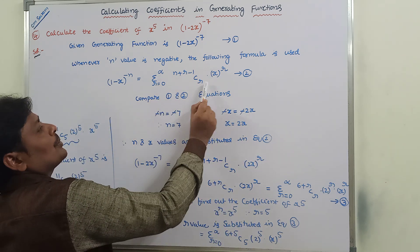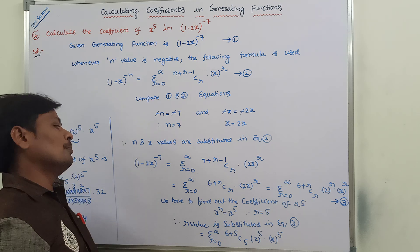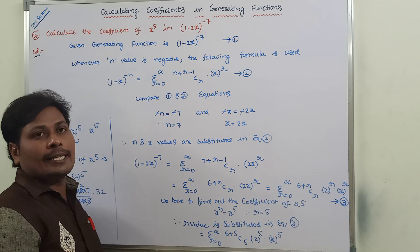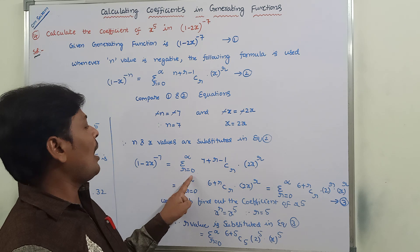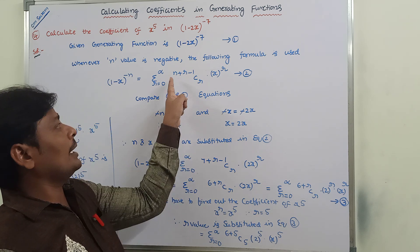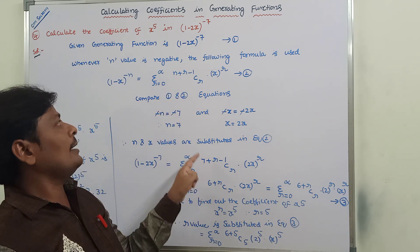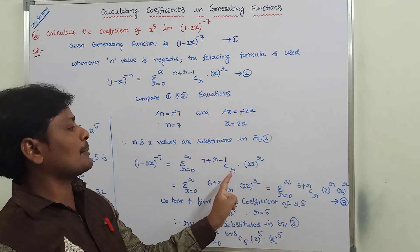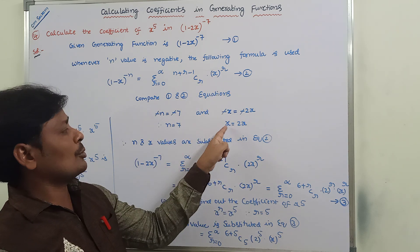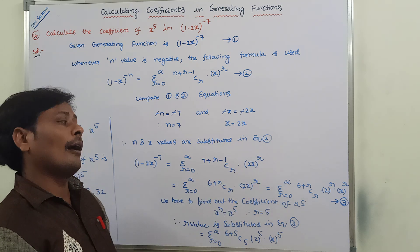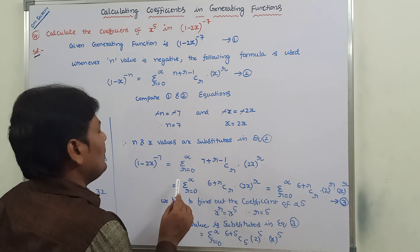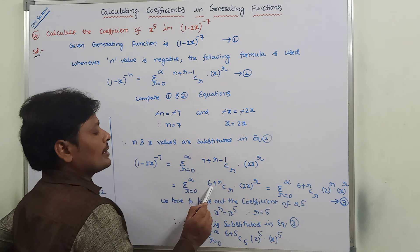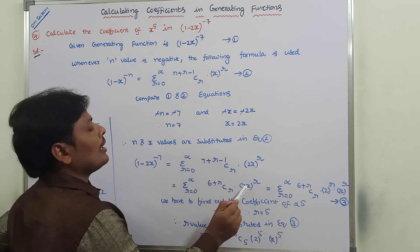Once we get the n value and x value, these values are substituted in equation 2. So (1 minus 2x) whole power minus 7 is equal to sigma, r is equal to 0 to infinity, (7 plus r minus 1) C r into x power r.